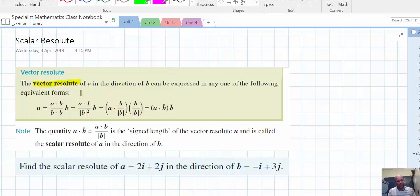Resolving a vector of A in the direction of B is written in various forms there, and we mainly used this first form. So, the Vector Resolute U, which is a Vector Resolute of A in the direction of B, is as such there.